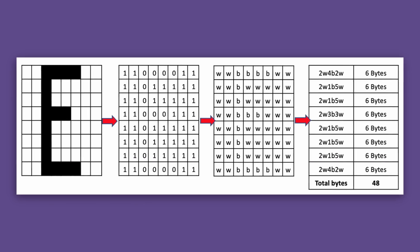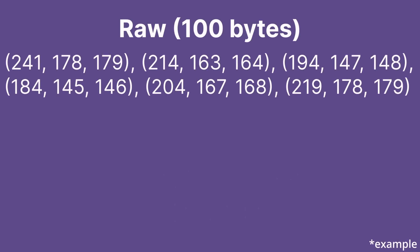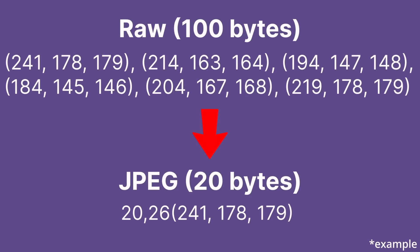One of the primary lossy methods is intra-frame compression. Intra-frame looks for redundancies within a frame and does not compare them to each other. For example, if there is a group of colors in a frame that are similar, the algorithm will find the average color. Notice how 19 different colors merged into one.